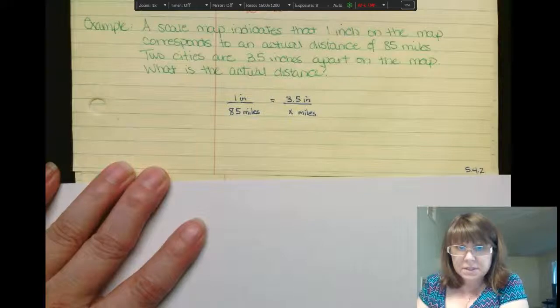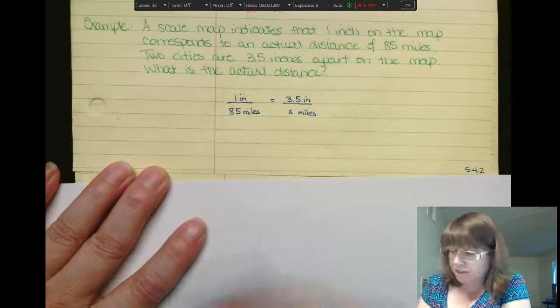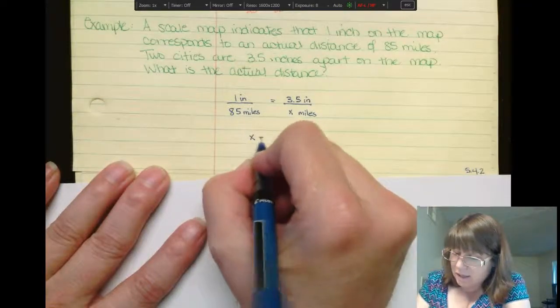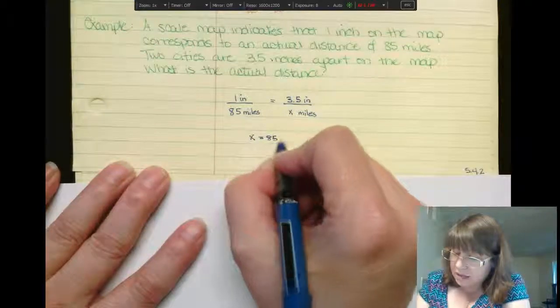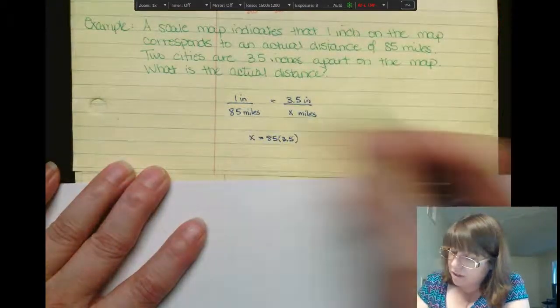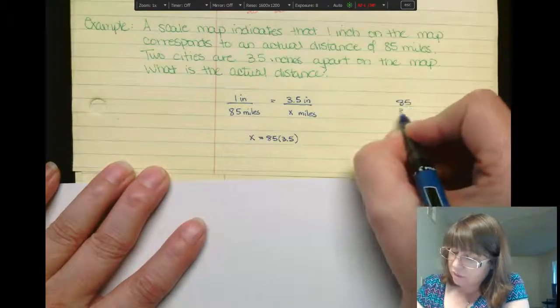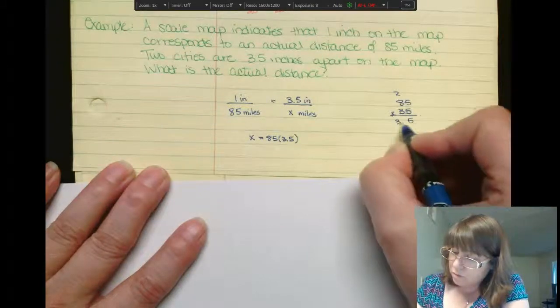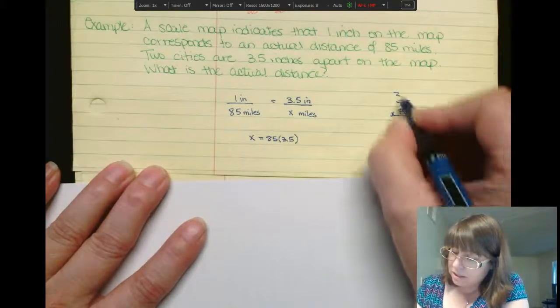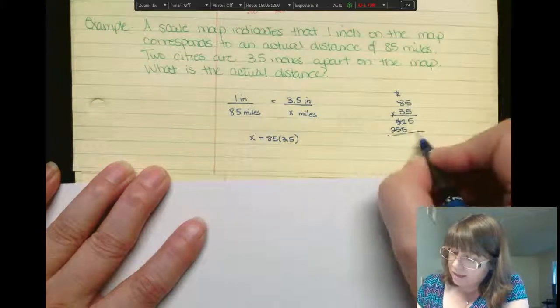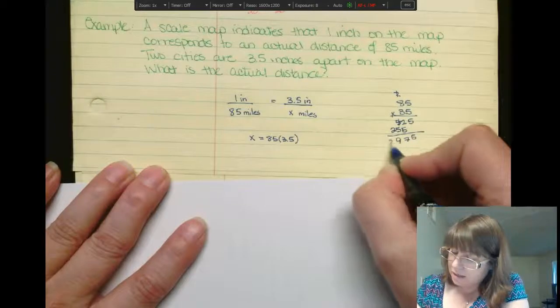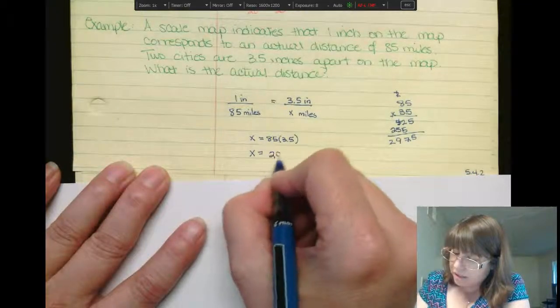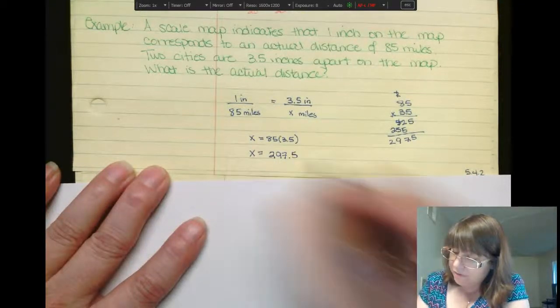Again, I'm going to use my extremes. The product of my extremes should equal the product of my means. So 1 times x is x. 85 times 3.5. I've got to do that math off to the side here. So 85, 3.5, it's going to be 5, 2, 40, 2, 15, 25, 5, 7, 9, 2. So x will equal 297 and a half miles.